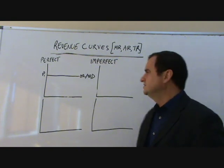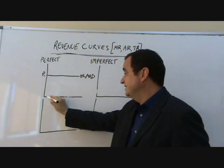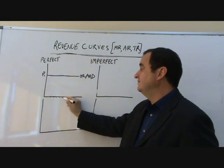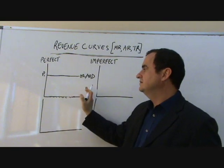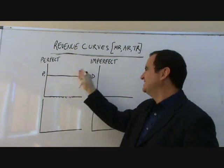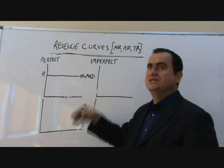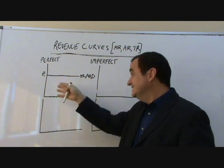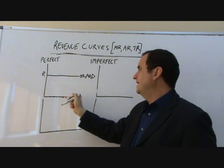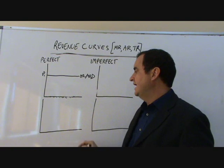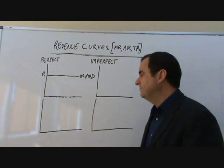There's no brand loyalty. So every unit they sell will be sold at the same price. The extra revenue gained for each extra sale is always P. So that's also the average revenue, and that's a very easy curve to draw.